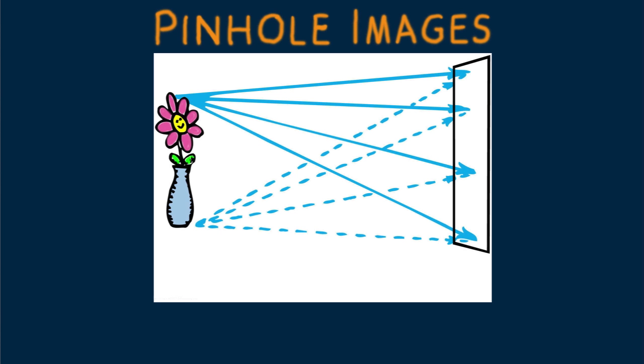Consider a flower in a vase. At any moment light reflects from the flower in the vase. A screen in front doesn't show an image of the flower and vase because there's too much overlapping of light.